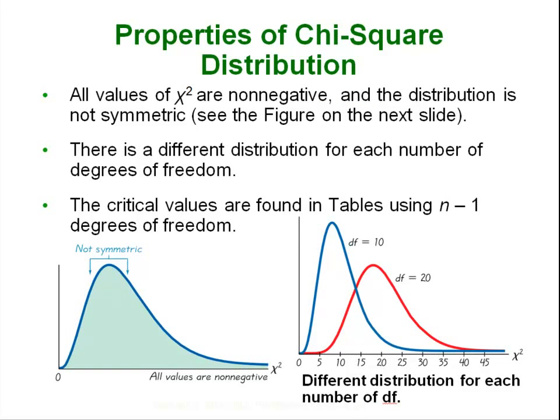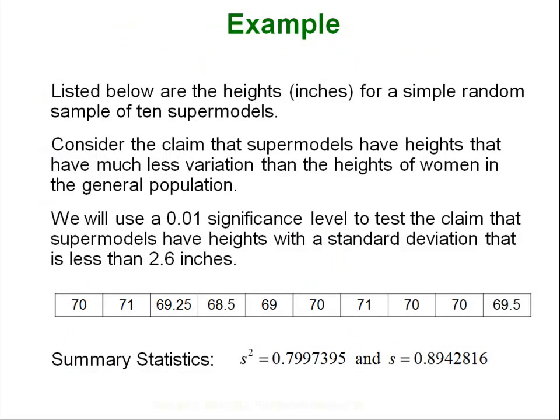Just a reminder of some of the properties of the chi-square distribution: all values are non-negative meaning zero and above. The distribution is not symmetrical as you can see from the pictures below. It's skewed to the right, severely skewed to the right. And as your degrees of freedom increase, as you can see from the picture on the right as you go from a degree of freedom of 10 to 20, the curve starts to kind of shift to the right and become less skewed and more symmetrical. Don't forget the degrees of freedom are always n minus 1.